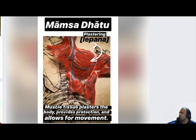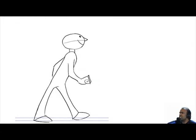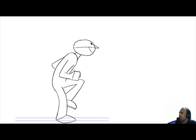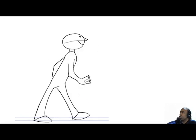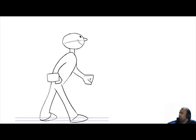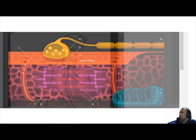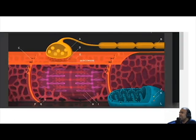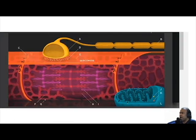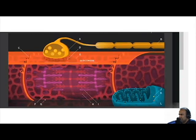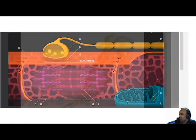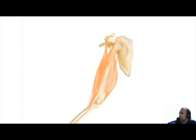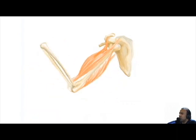Mumsadatu also allows for movement and just about all activities of the body; the karma and kriyas are controlled by the function of Mumsadatu. Muscle cells are excitable, meaning they respond to stimuli, allowing for contractility — essentially shortening — which generates a pulling force, and it is this pulling force that is the basis of movement.